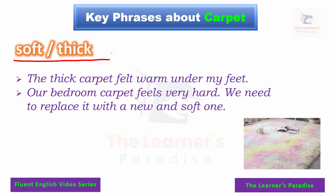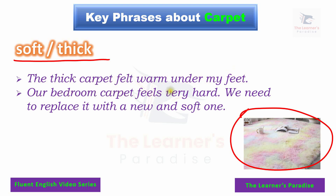A carpet can be soft or it can be thick. In this image, we have a carpet that looks very soft and it is also a very thick carpet. Example sentence: the thick carpet felt warm under my feet. Our bedroom carpet feels very hard — we need to replace it with a new and soft one.